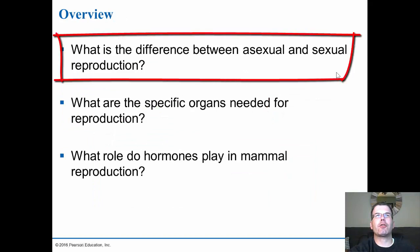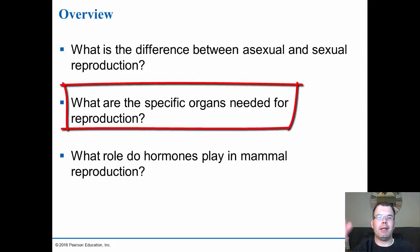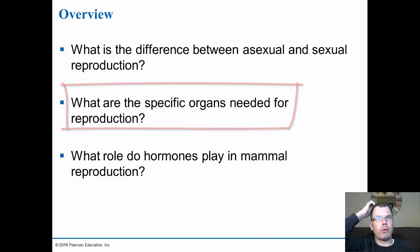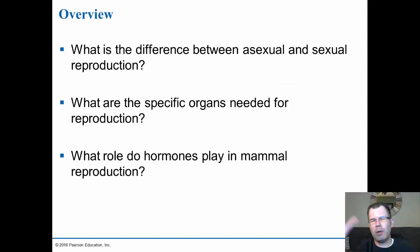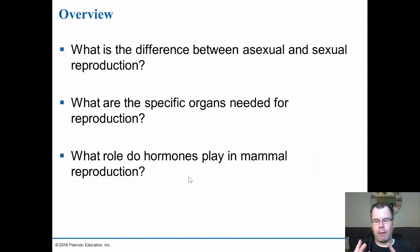So today we're going to talk about: the difference between asexual and sexual reproduction — asexual being a clone of the parent versus sexual being the mixing of genes between two parents — and specific organs needed for reproduction in humans and other animals, doing some comparative anatomy. We'll also look at what roles hormones play in mammal reproduction.